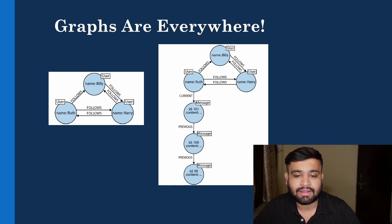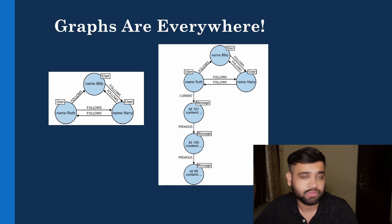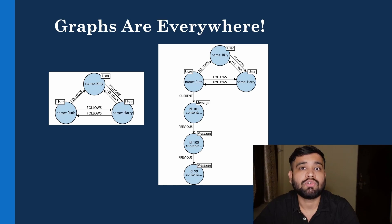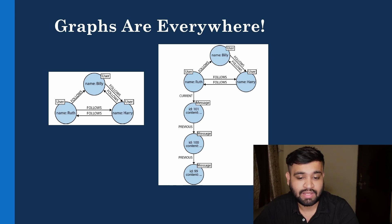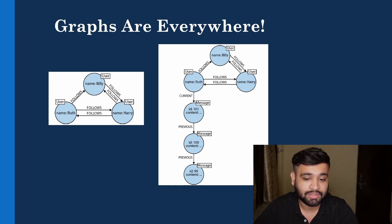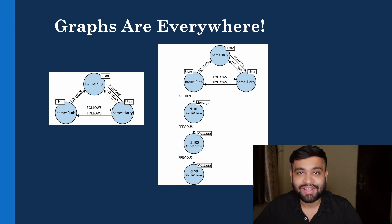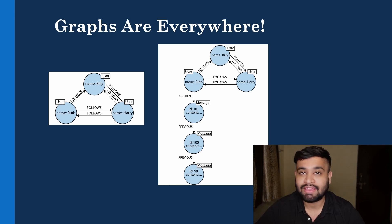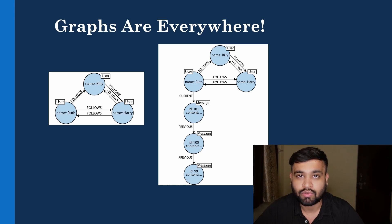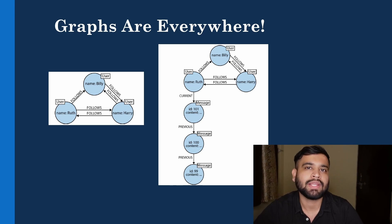Let's take a step further and add Ruth's messages to our graph. In the second graph, we incorporate a Message node. It shows three messages published by Ruth, with two relationships: 'Current' and 'Previous', representing the current message posted by Ruth as well as her previous messages. But this is just a simple example — Twitter has millions, even billions, of nodes in the graph.